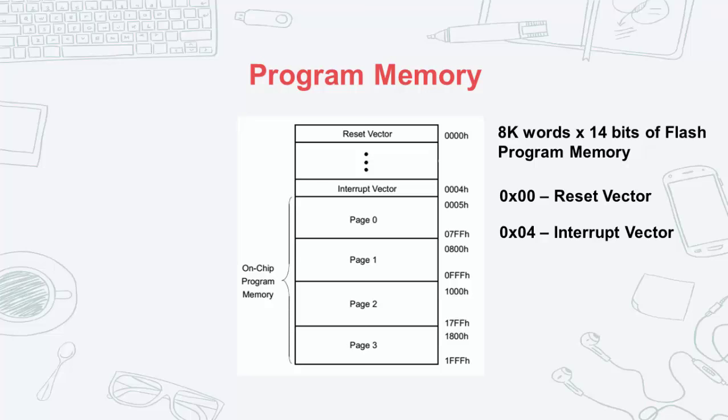The interrupt vector contains the addresses that the microcontroller will jump to for a particular interrupt. For example, you have a variable that holds the total number of seconds that the MCU is running and you want to increment it every second. What you have to do is create an interrupt that would occur every second, then create a function that would increment that variable by 1, and put the address of that function in the interrupt vector.